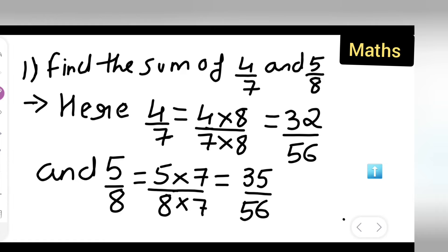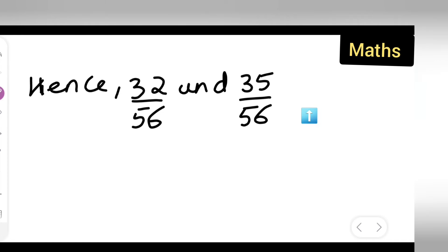Now, what answer y'all got is, 32 upon 56. Y'all got 32 upon 56 and 35 upon 56. So write down, hence, 32 upon 56 and 35 upon 56 are like fractions.